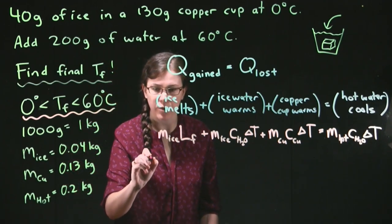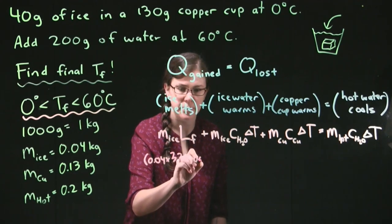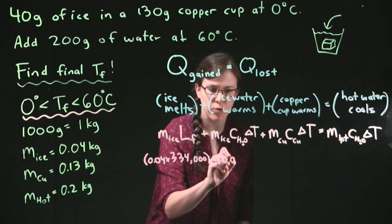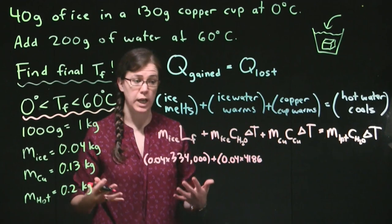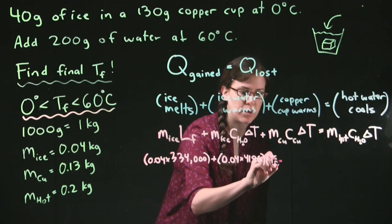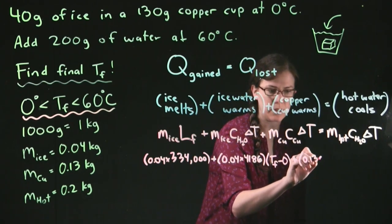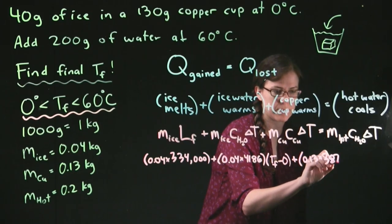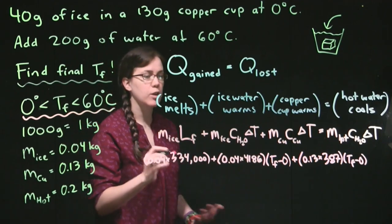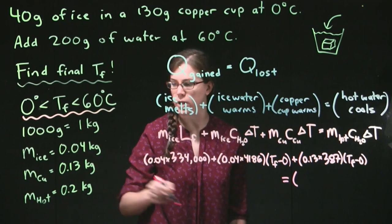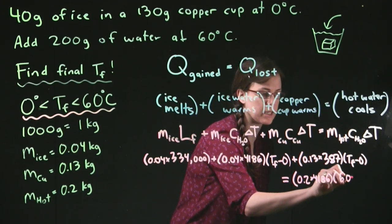So we'll put in these numbers. We have 0.04 times 334,000, big numbers. We have 0.04 times 4186. And these numbers, by the way, for L and for C, those are numbers we can look up or that we would have provided to us. And then that delta T is T_final minus zero. We have the mass of copper, 0.13, the C of copper is 387, and then we have T_f minus zero. That's the whole left side. And then all of that is equal to the mass of hot water, 0.2 times 4186, and then this is really important, it's 60 minus T_f. And that's our right side.